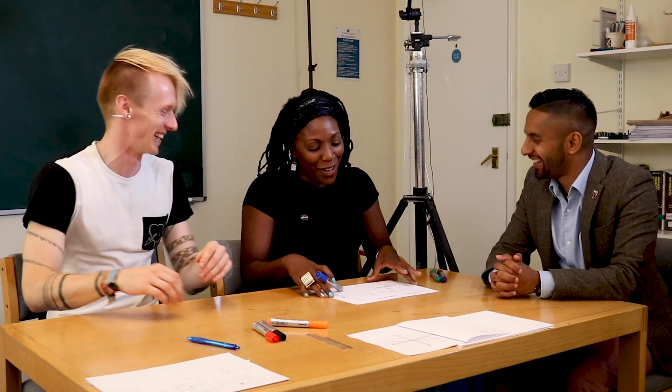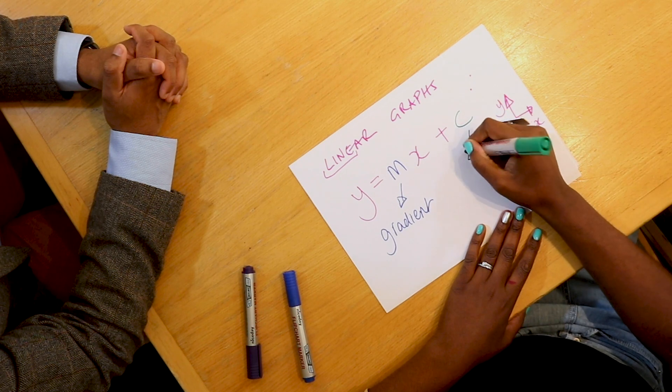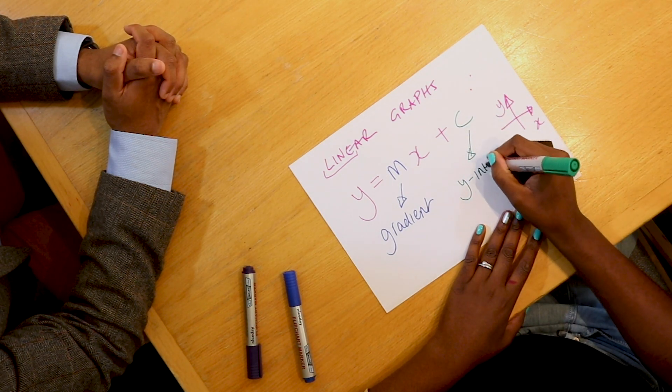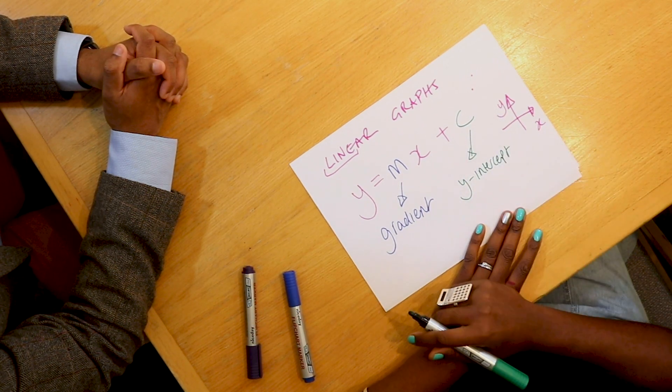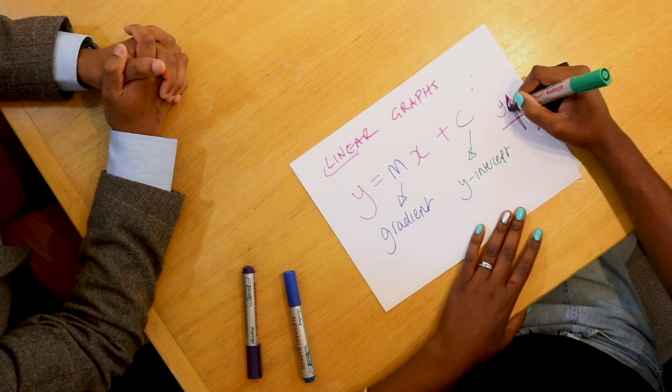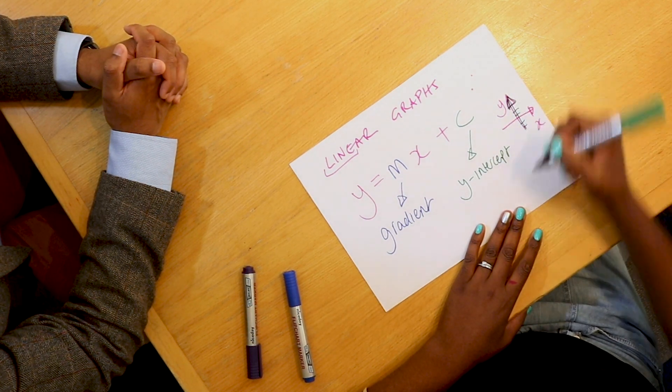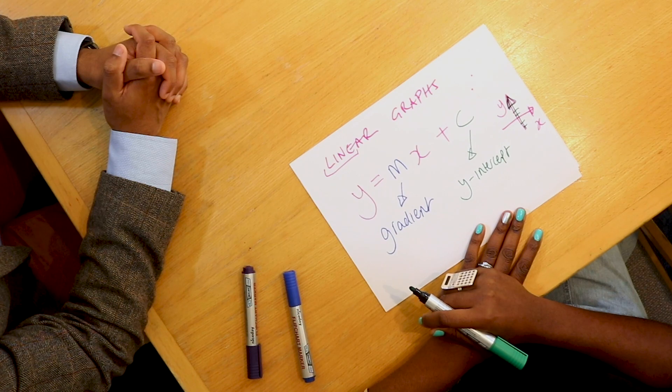That's what the origins are — M for mountain, climb on a mountain. So M is to do with your slope. And then the C — this is our y-intercept. That is where it crosses our y-axis. So these things are what you need to name a line.